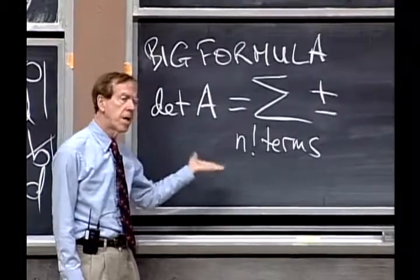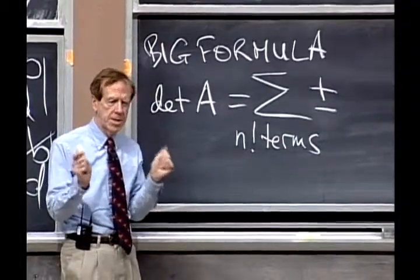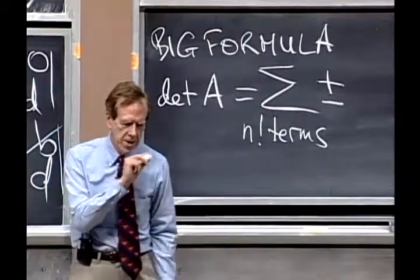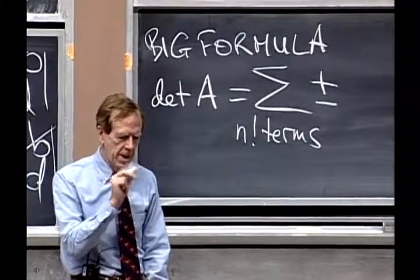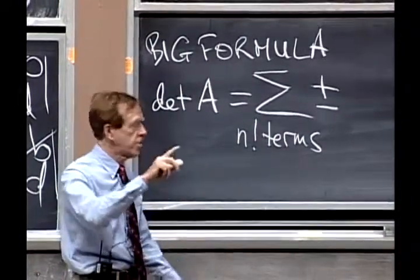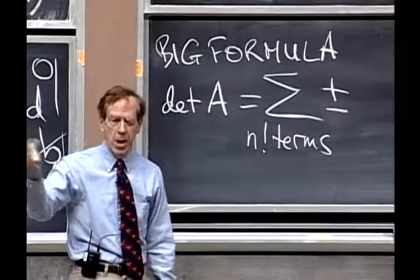And where do those n factorial terms come from? This is the moment to listen to this lecture. Where do those n factorial terms come from? They come because the guy in the first row can be chosen n ways.